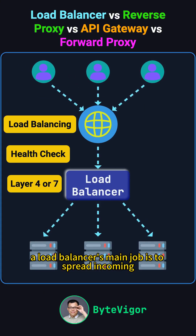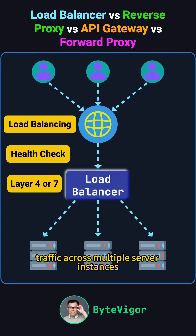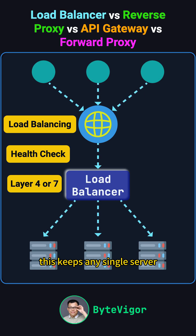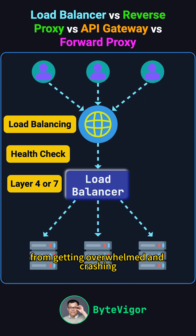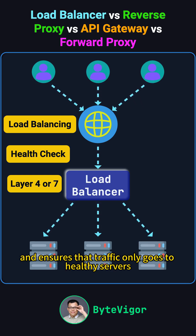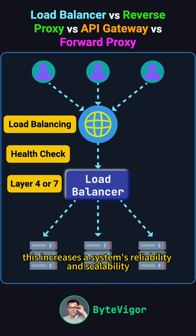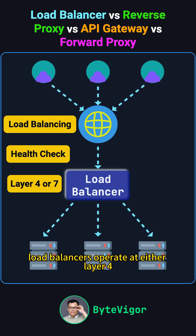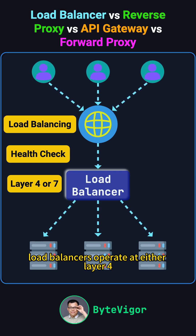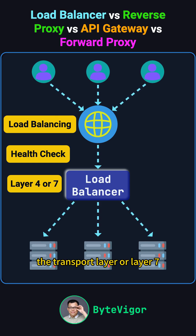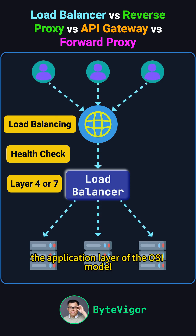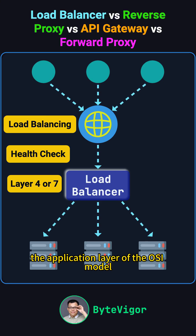A load balancer's main job is to spread incoming traffic across multiple server instances. This keeps any single server from getting overwhelmed and crashing, and ensures that traffic only goes to healthy servers by performing health checks. This increases a system's reliability and scalability. Load balancers operate at either layer 4, the transport layer, or layer 7, the application layer, of the OSI model.